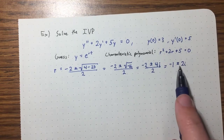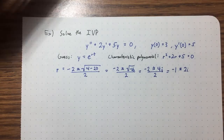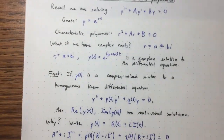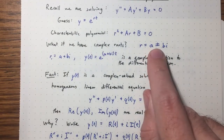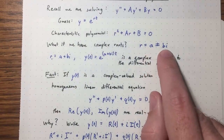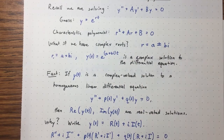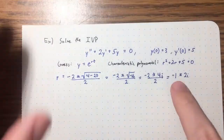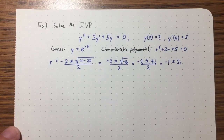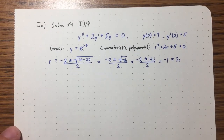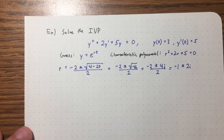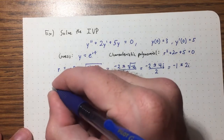Those are our two roots. We can see they're written in the form a ± bi — they're complex conjugates: −1 + 2i and −1 − 2i. But remember, we only actually need to use one of those.